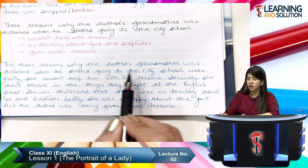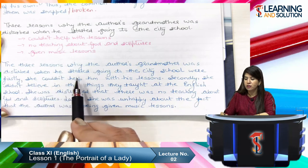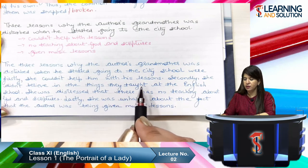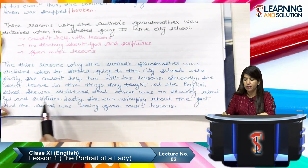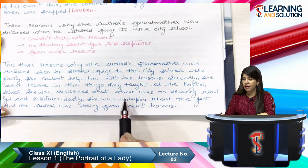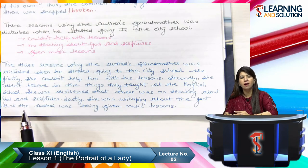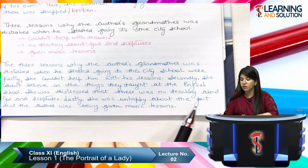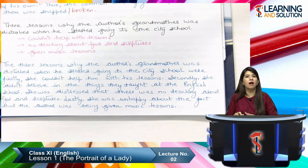Let's see how we can write a model answer incorporating these points. The three reasons why the author's grandmother was disturbed when he started going to the city school were: firstly, she couldn't help him with his lessons; secondly, she didn't believe in the things they taught at school; she was distressed that there was no teaching about God and scriptures; and lastly, she was unhappy about the fact that the author was being given music lessons. This answer is sufficient — it's a two-mark question requiring 30 to 40 words.